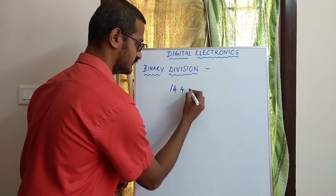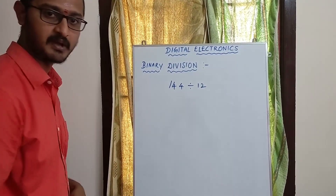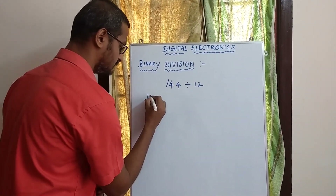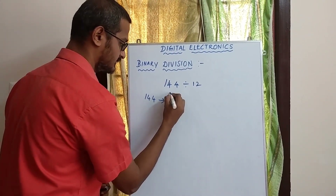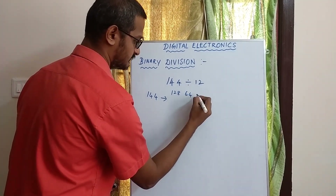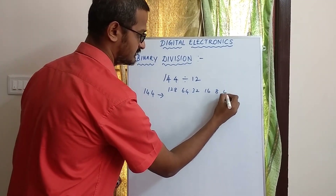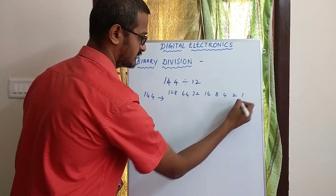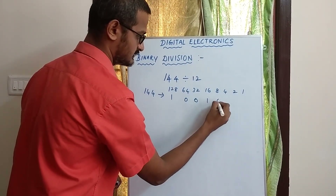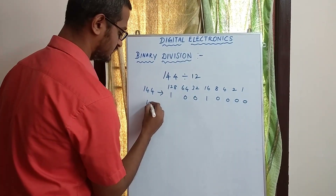So the example is 144 divided by 12. We look at the binary number for 144 using the 8421 code: 128, 64, 32, 16, 8, 4, 2, 1. So 128 plus 10, 10, 10, 10, 10. And for 12, we do the same.